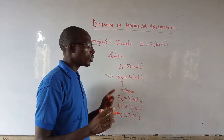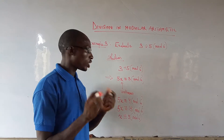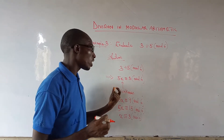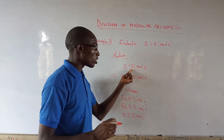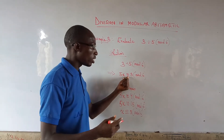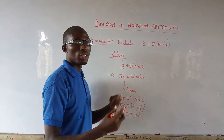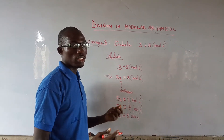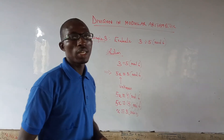Division in modular arithmetic requires a technical operation, whereby you rewrite the division as a congruence equation. You can use any letter for the unknown. Thanks for listening.